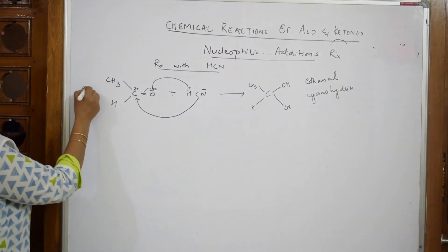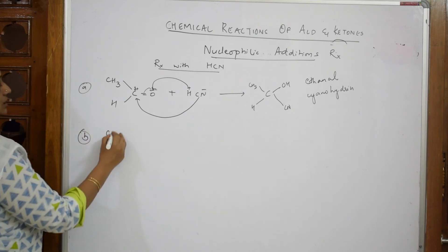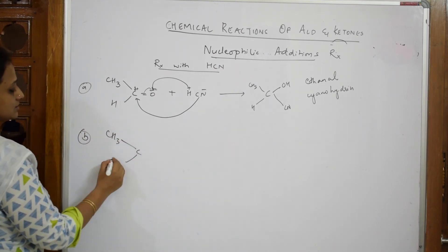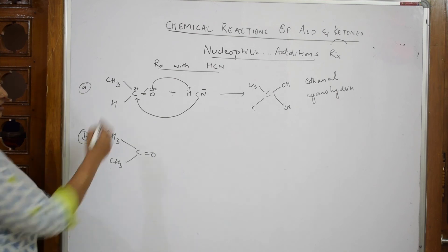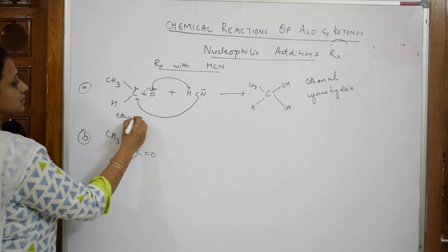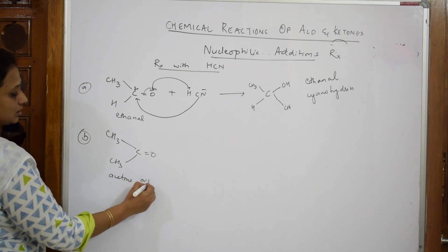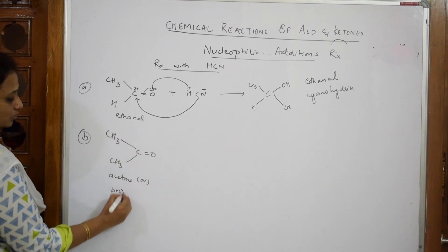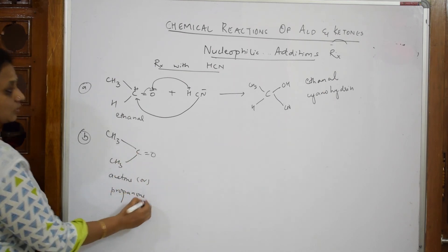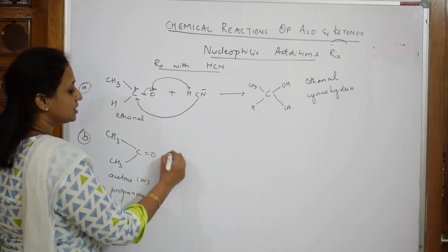Now I'm going to take a ketone - CH3-C(=O)-CH3. This is a ketone, acetone or propanone with three carbons. Now I have to add HCN to this.